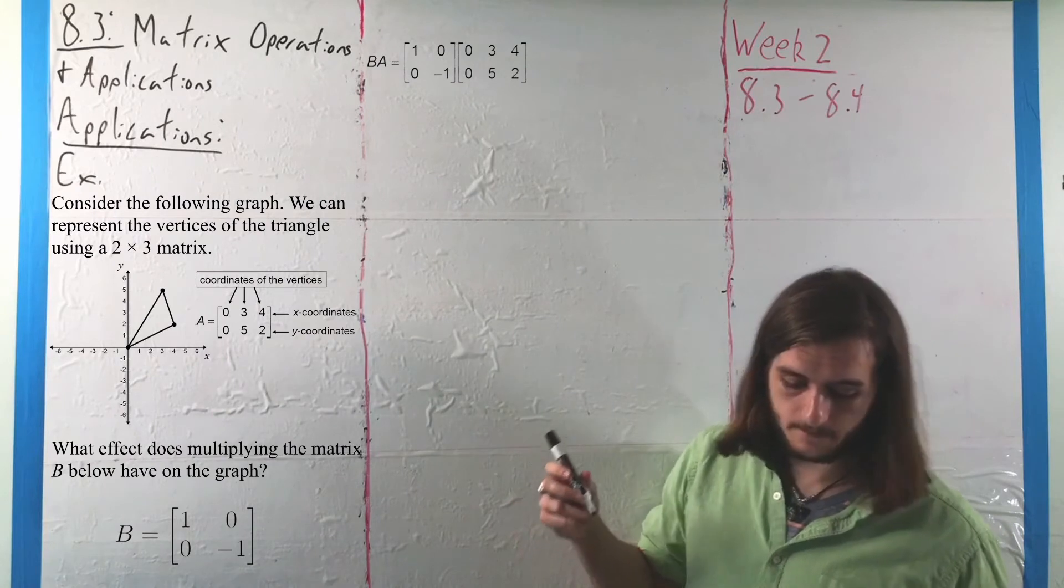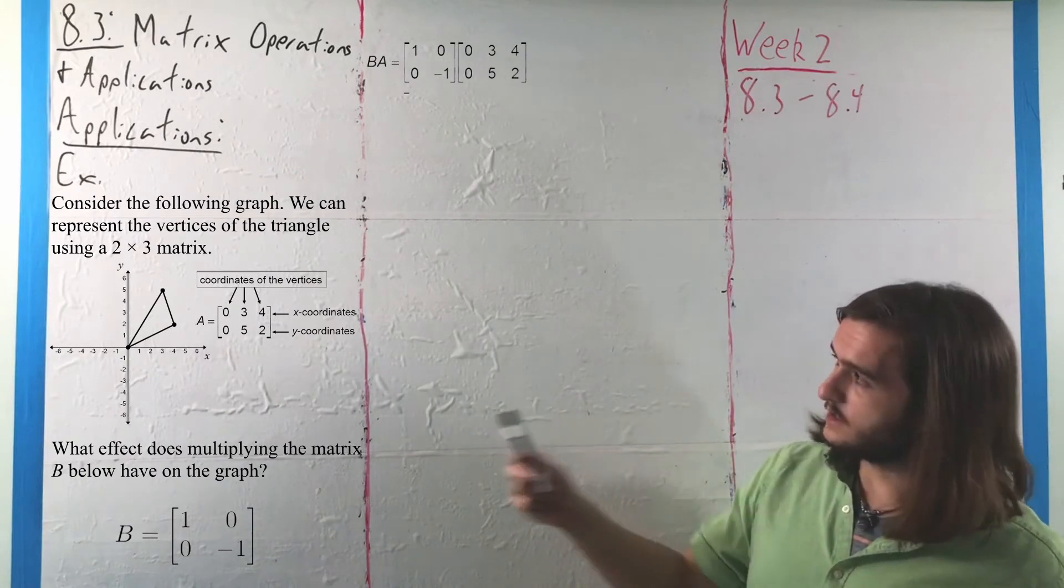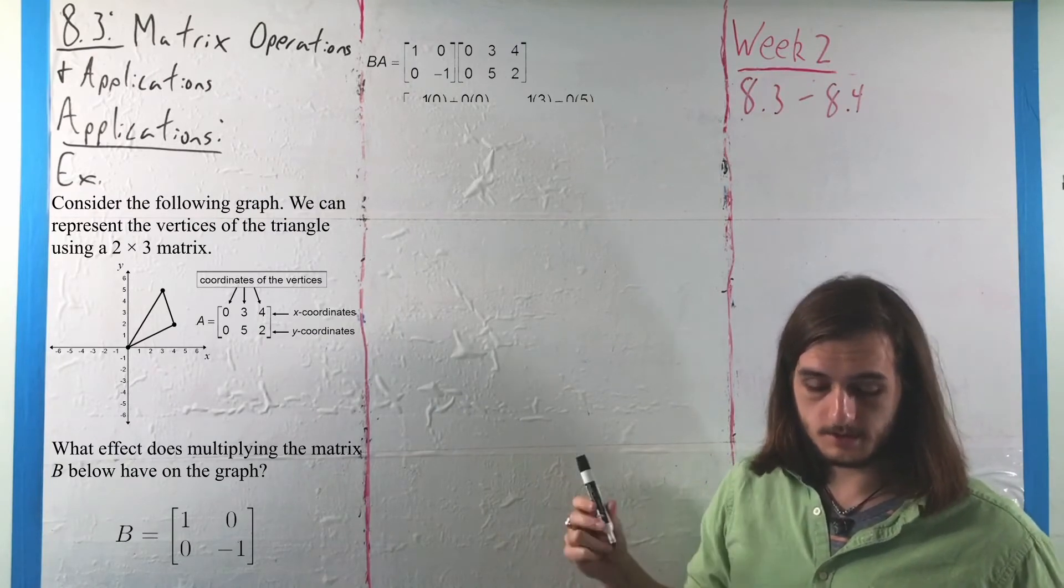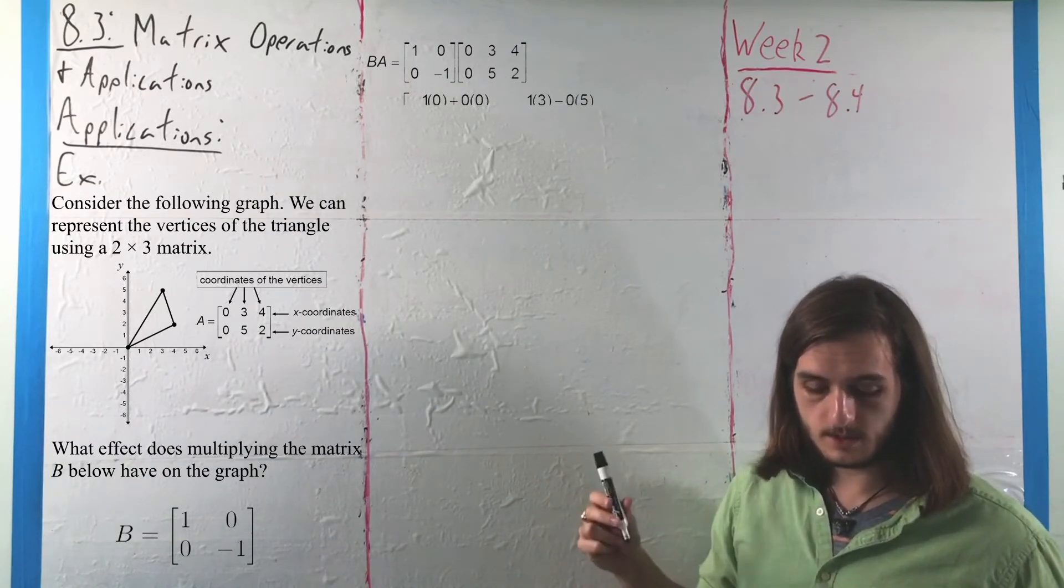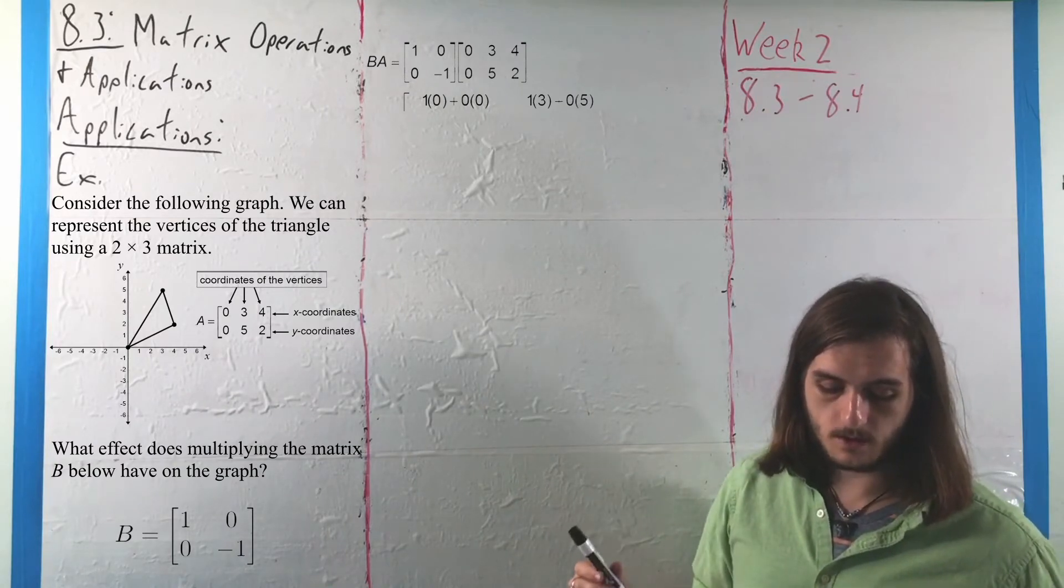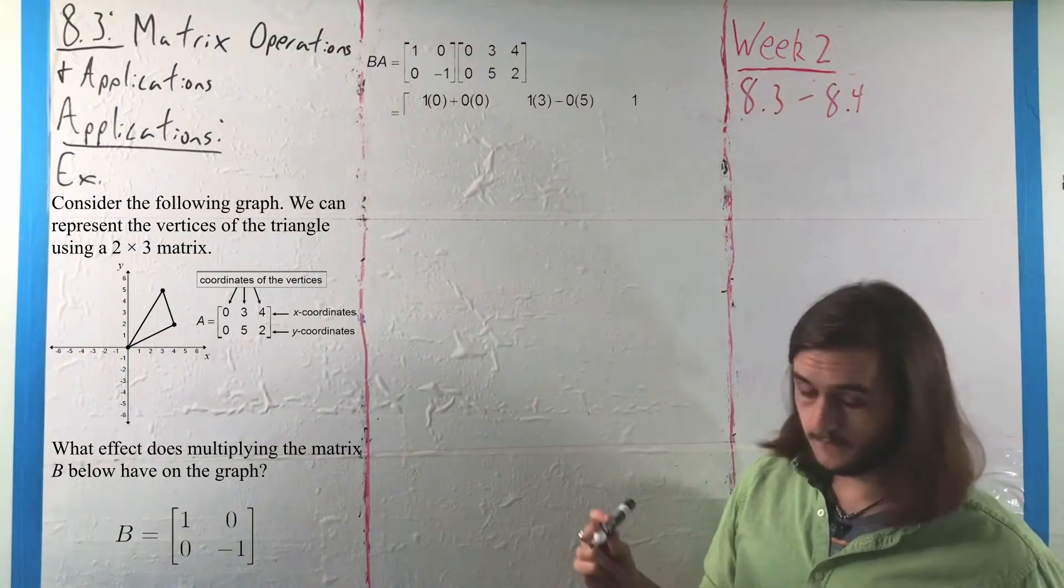What we'd get is following through on these rows: 1 times 0 plus 0 times 0, 1 times 3 plus 0 times 5, 1 times 4 plus 0 times 2 in the first row.